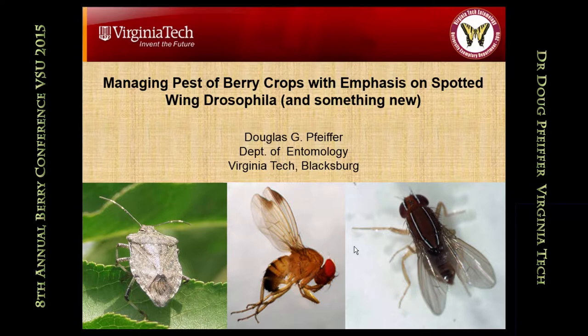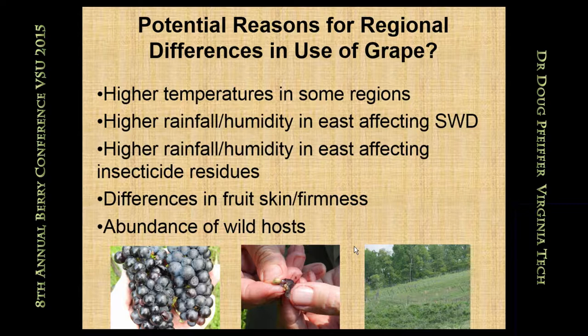The fly on the right is the African fig fly. Berries really everywhere are subject to Spotted Wing Drosophila infestation. A couple of crops are borderline — for example, grapes. When it was first introduced into California, which was a couple of years before we got it, it was thought not to really be a big problem in grapes, infesting grapes only if they're already split by something else.